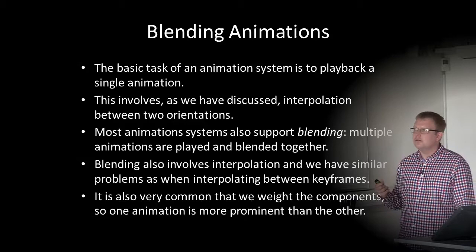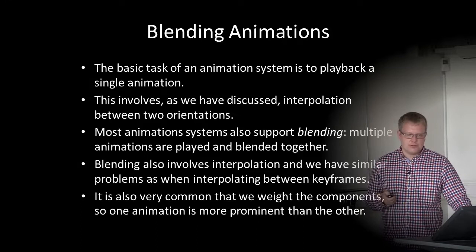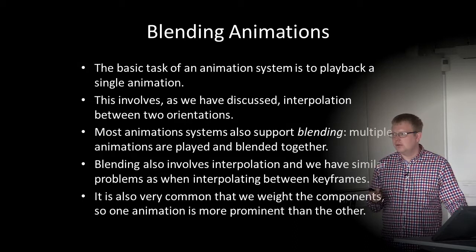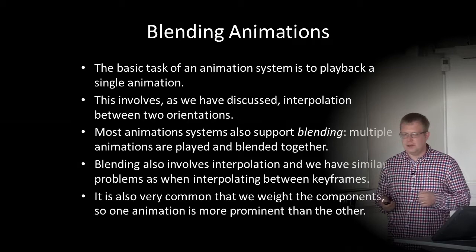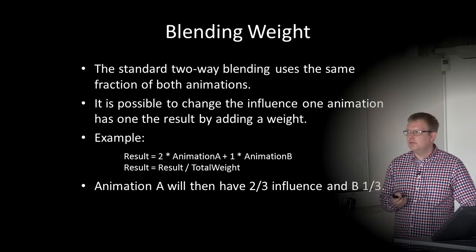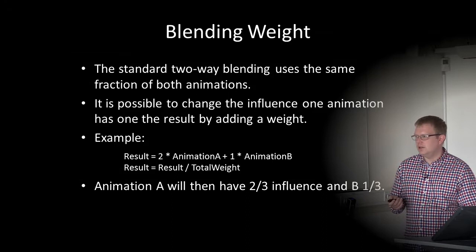It can also happen that we need to blend several animations together. A basic task of an animation system is to play back a single animation, which involves interpolation between two orientations. Most animation systems also support blending — multiple animations are played and blended together, involving similar interpolation problems. It's also common to weight components so one animation is more prominent. The standard two-way blending uses the same fraction of both; adding a weight lets you change the influence — for example, two times animation A plus one animation B, divided by total weight, gives animation A two-thirds influence and animation B one-third.